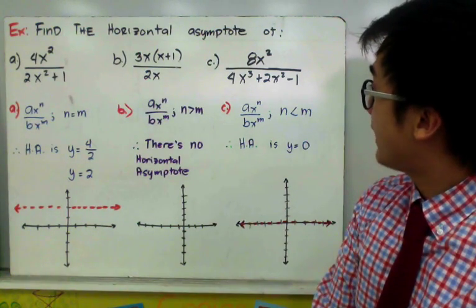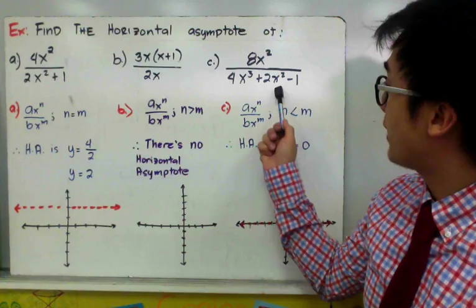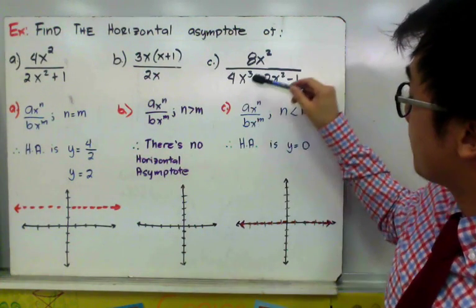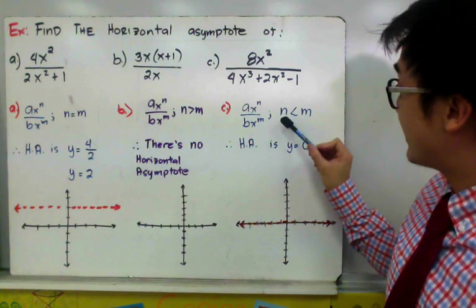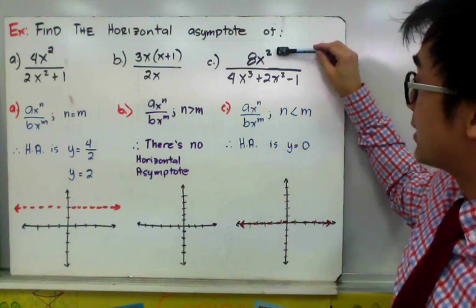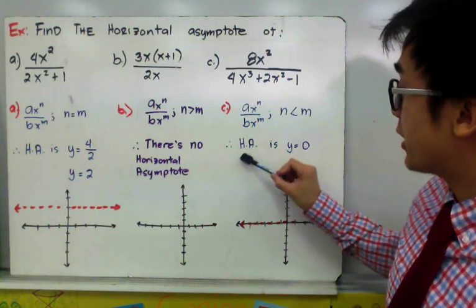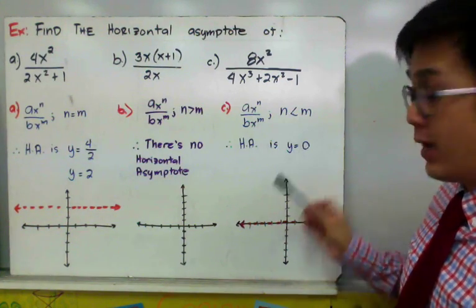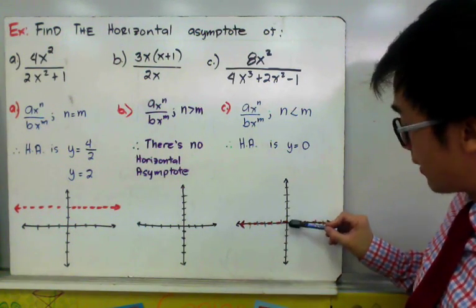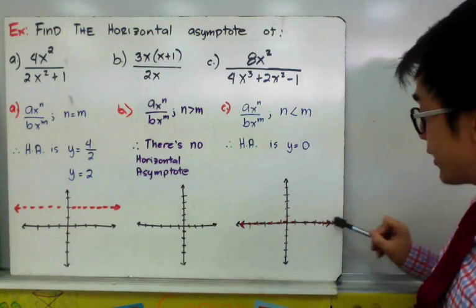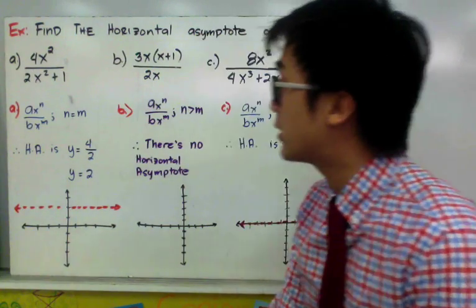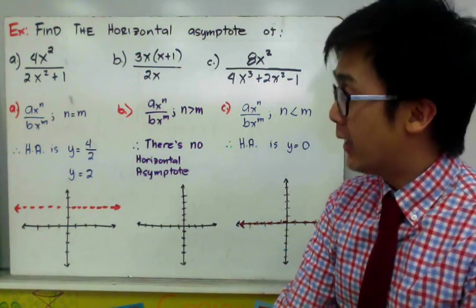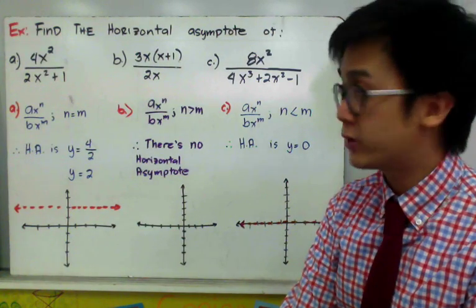For letter C, we have 8x³ / (4x³ + 2x² - 1). The highest exponent on top is 2 and on the bottom is 3, so n < m. Therefore, the horizontal asymptote is at y = 0, which is at the origin. That is how we find the horizontal asymptote of a given rational function. Today we learned how to find both vertical and horizontal asymptotes of rational functions.